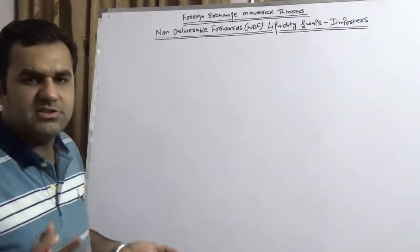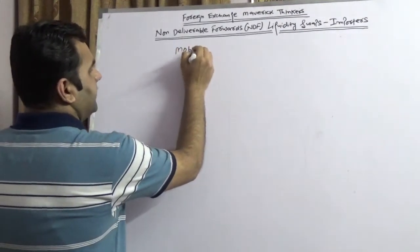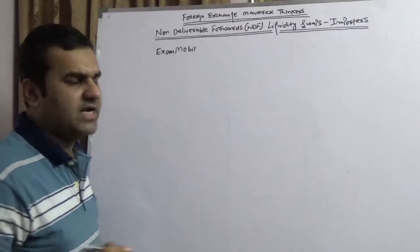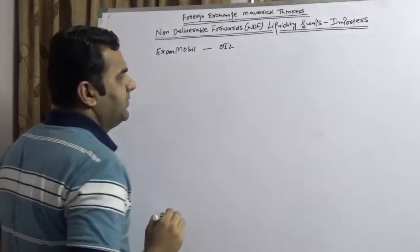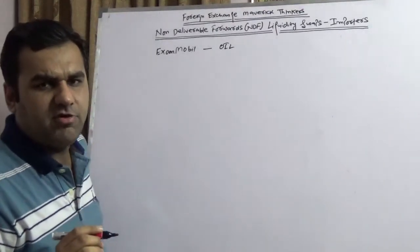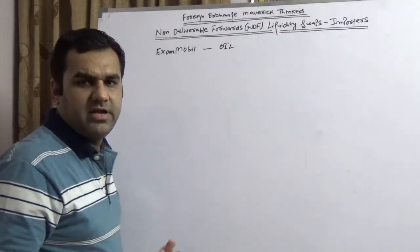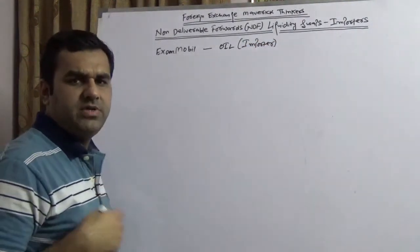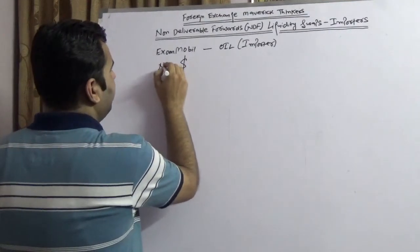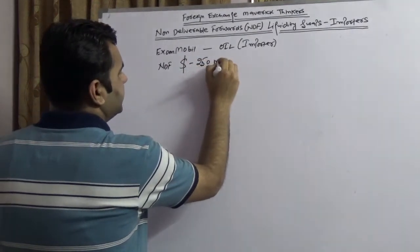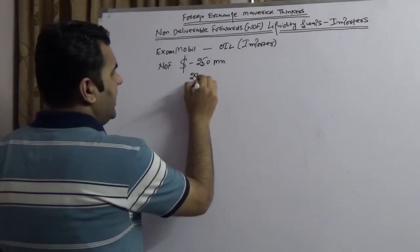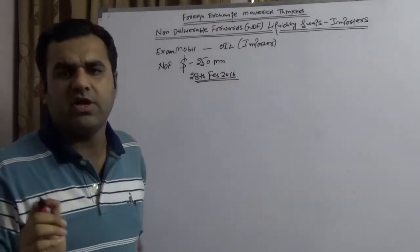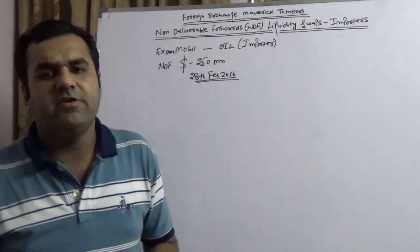I am taking an example of one of the largest oil companies in the world to whom I am terming as ExxonMobil. ExxonMobil is the largest petrochemical company in the world. I am assuming that ExxonMobil would like to take a non-deliverable forward contract. Since they are the largest petrochemical companies, I am writing that they are the largest importer in the world. In ExxonMobil, I am assuming that they want to go for a non-deliverable forward of 250 million dollars and today they are sitting on 28th of February 2016.